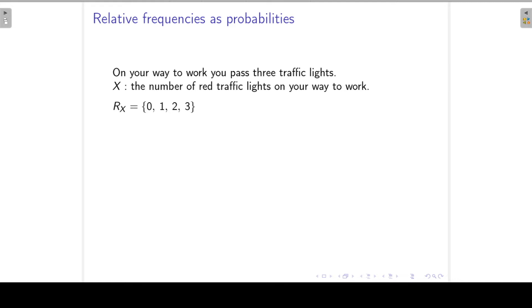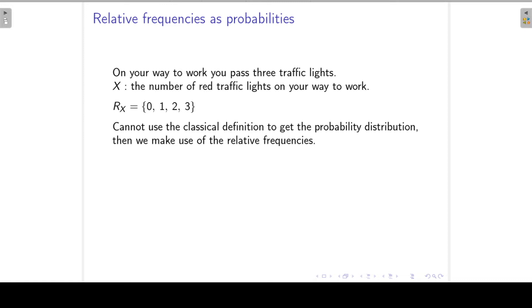Remember a previous example: on your way to work you pass three traffic lights, and we define a random variable X as the number of red traffic lights on your way to work. The domain is 0, 1, 2, or 3. In this case we cannot make use of the classical definition to find the probabilities, so we have to use relative frequencies to find our associated probabilities and set up our probability distribution.